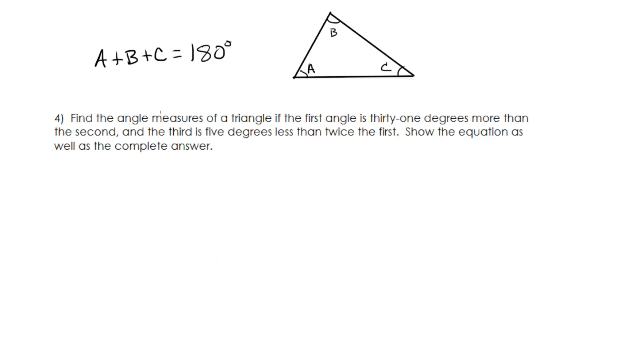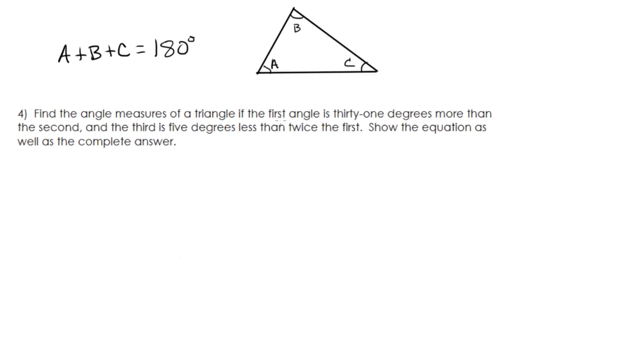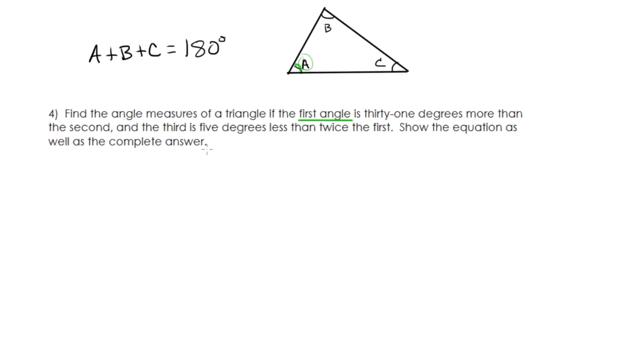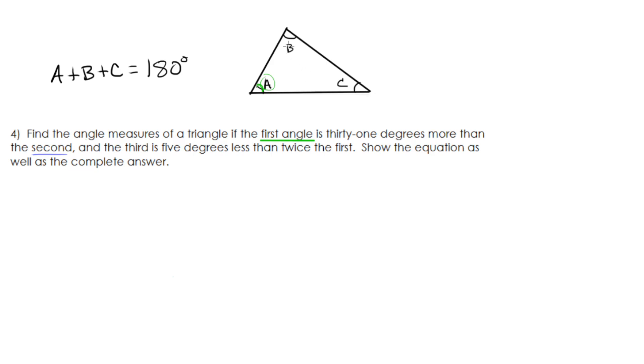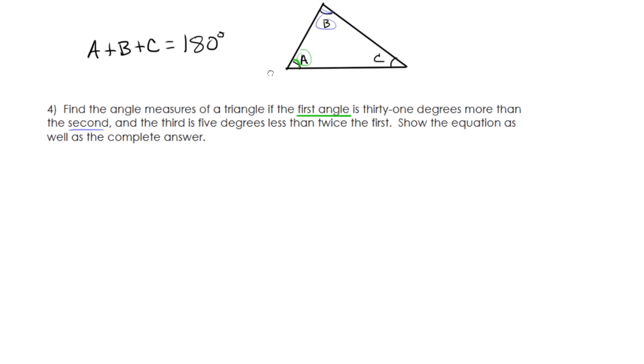And something that's not mentioned in this story is some truth that you know that the measurement of angle A plus B plus C, we know that has to be 180 degrees because every triangle adds up on the inside to 180 degrees. Now let's find the angle measures. So it says the first angle. Okay, the first angle.